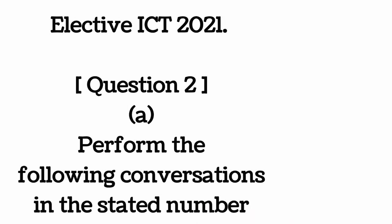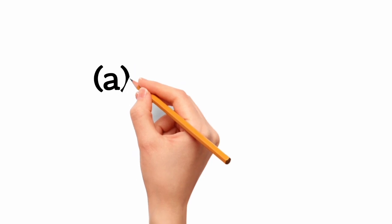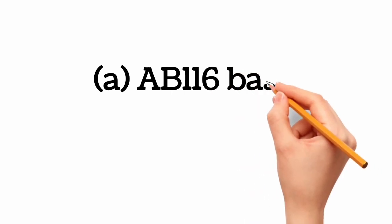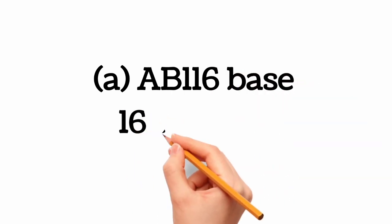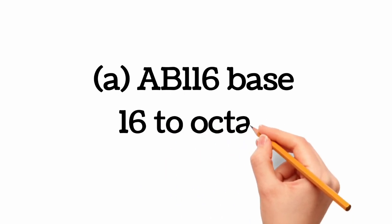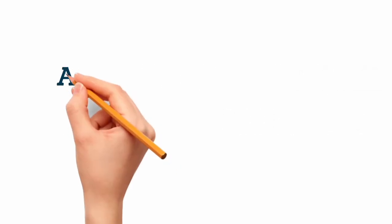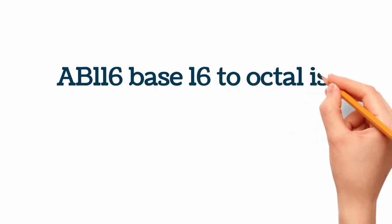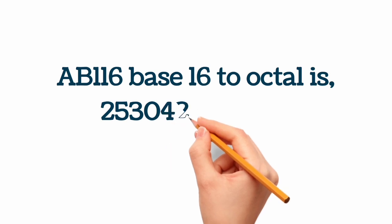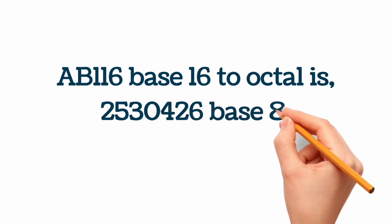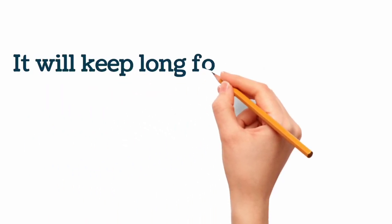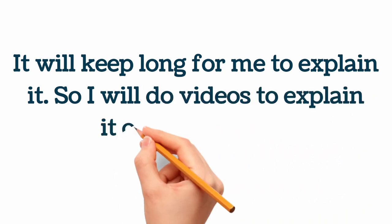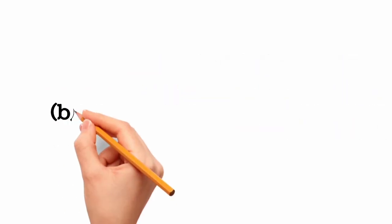Question 2a: perform the following conversions in the stated number bases. We have AB1 base 16. When we see something like this, we know it is hexadecimal or base 16. We are to convert AB1 base 16 to octal which is base 8. The result is 2530426 base 8. I will explain the conversion steps in more detail in separate videos.